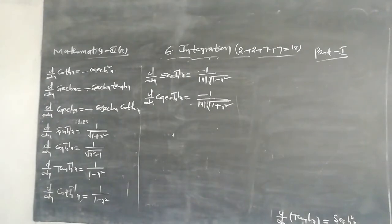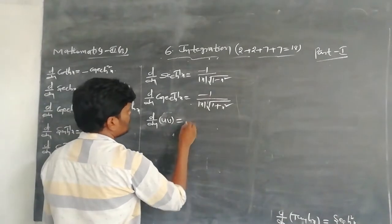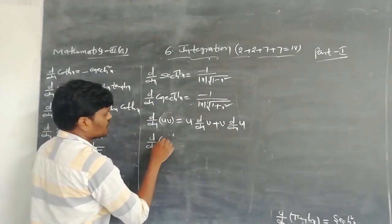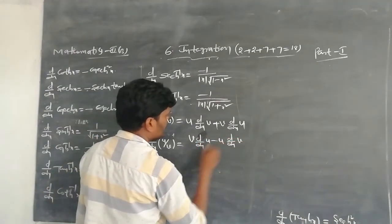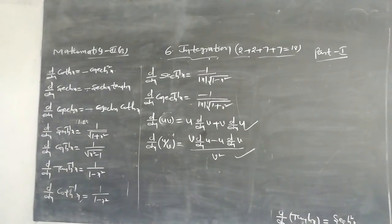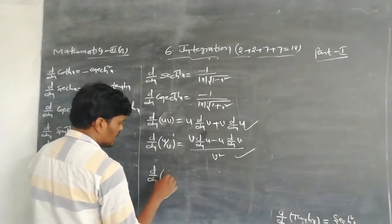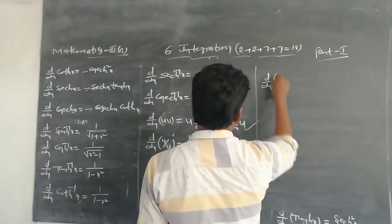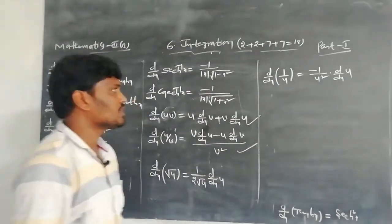These are all the derivative formulas. One more formula: derivative of u·v = u·(dv/dx) + v·(du/dx). Derivative of u/v = [v·(du/dx) − u·(dv/dx)] / v². Derivative of √u = 1/(2√u) · (du/dx). Derivative of 1/u = −1/u² · (du/dx).